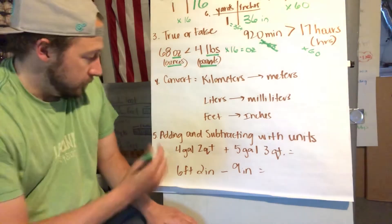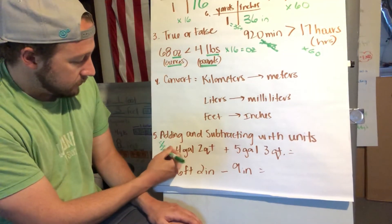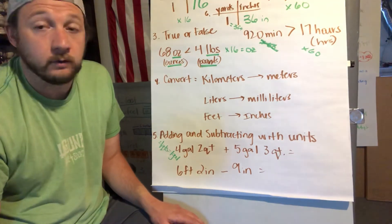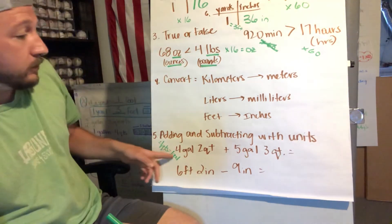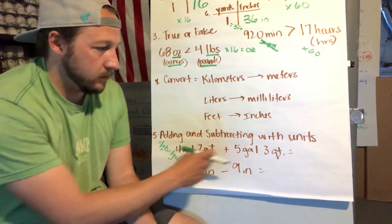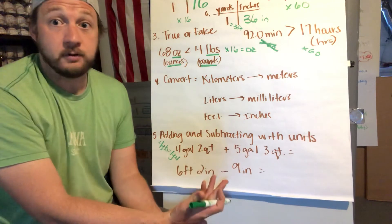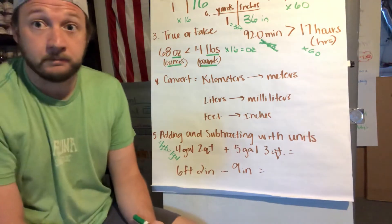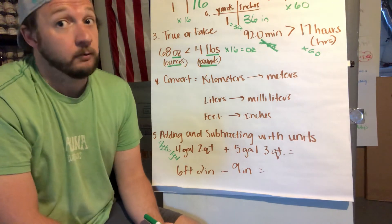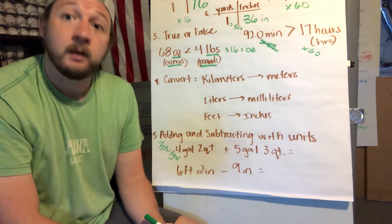Because you have four gallons two quarts and five gallons and three quarts. Well, if you're a smart person you know that there are four quarts in one gallon, wink wink for the first problem. So you need to add these together and then you're going to wind up with two quarts and three quarts, which is five quarts. You have more quarts than are in a gallon, you need to regroup your units.